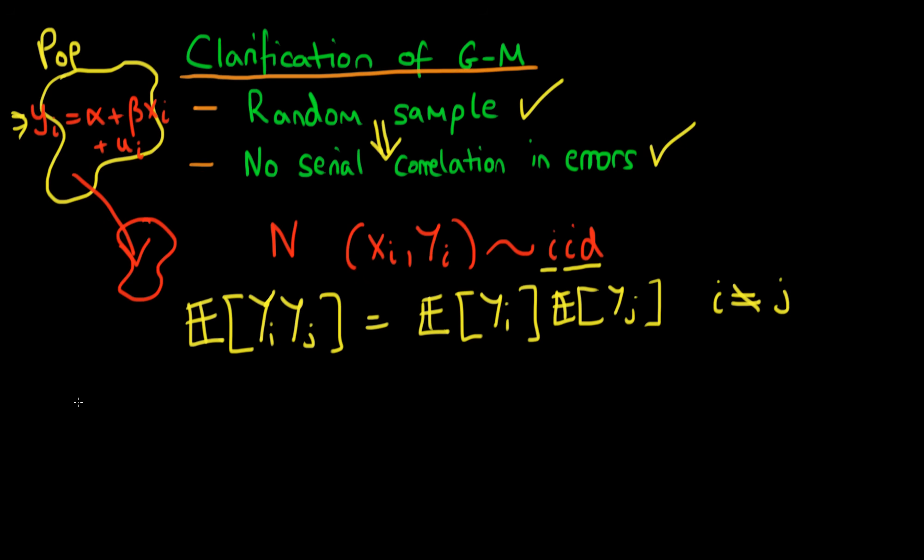So what does this imply for the covariance between error terms? In order to work this out, first we need to work out what is the covariance between yi and yj. If you work through the definition of the covariance, it just means that this is given by the expectation of yi times yj minus the expectation of yi times the expectation of yj.